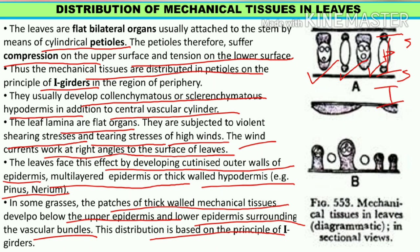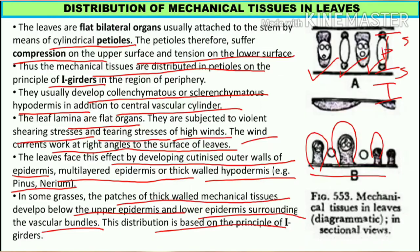Below the epidermis, whether upper or lower epidermis, vascular tissues are present. Eye girders based on the principle of mechanical strength provide and sustain the leaves from different mechanical stress conditions. In this video lecture, we have seen the distribution of mechanical tissues and different principles governing their distribution.